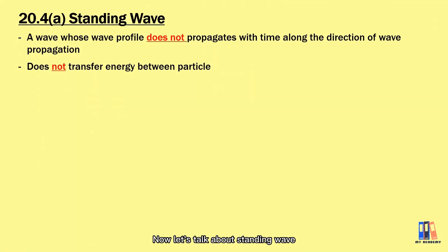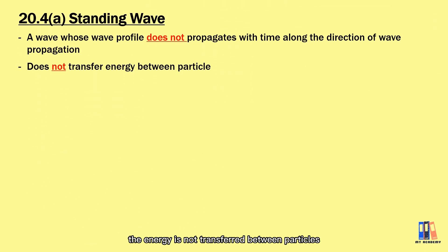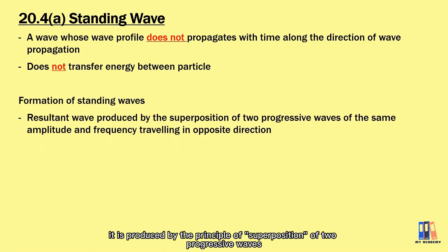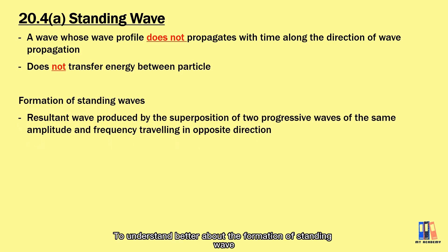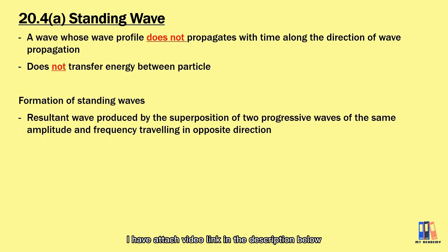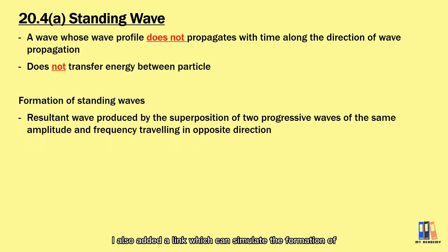A standing wave is one whose wave profile does not propagate with time along the direction of wave propagation. Unlike a progressive wave, energy is not transferred between particles. It is produced by two progressive waves of the same amplitude and frequency travelling in opposite directions. I have attached a video link and a simulation link in the description below, which I recommend you watch to better understand the formation of standing waves.